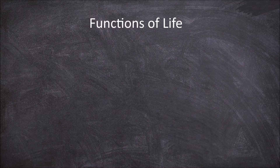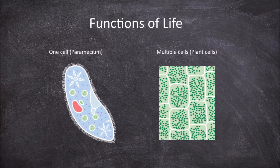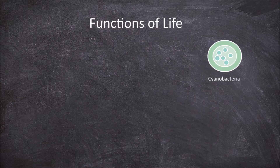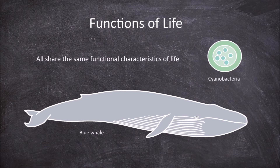In this video we are going to go over some of the basic functions essential for life. Based on cell theory, all living things have a cellular structure — they are made up of one or more cells. All forms of life, from unicellular bacteria to the large blue whale, share the same functional characteristics of life.